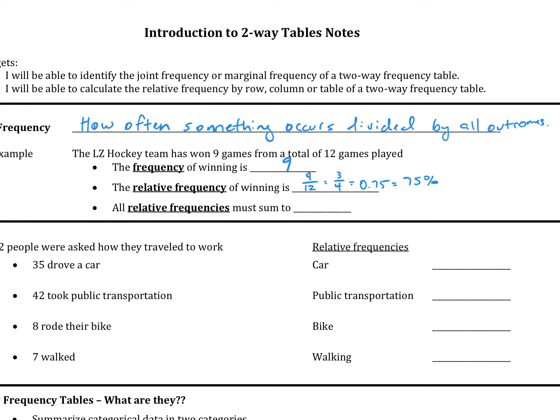One thing we have to keep in mind is that all relative frequencies must sum to one if you're talking about decimals, or 100% if you're talking about percentages. So depending on whether you're doing by row, by column, or by table, that will determine which parts are adding up to that one or 100.